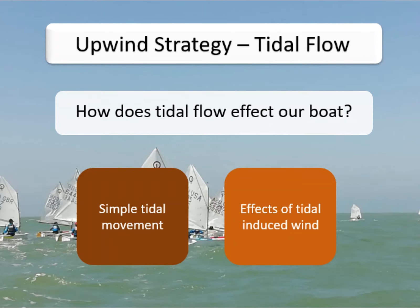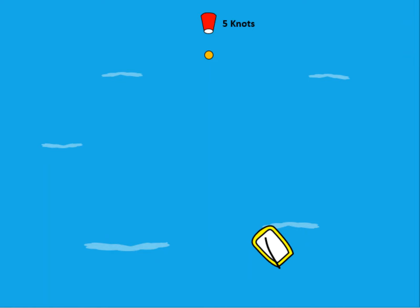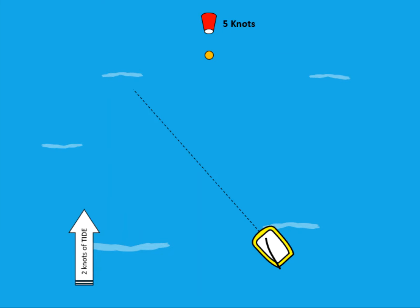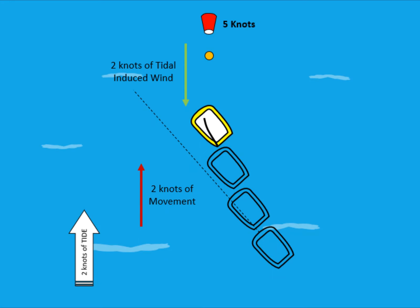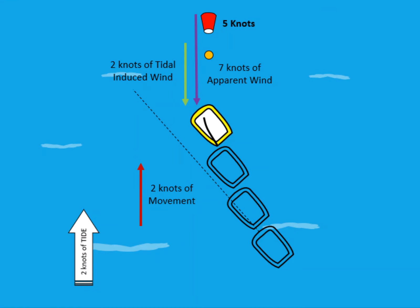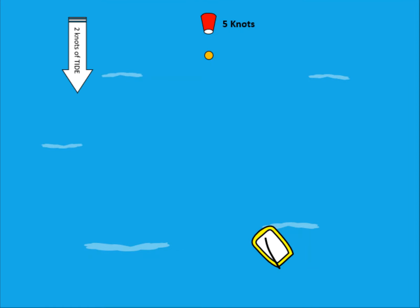Now let's look at the effect of this in normal sailing conditions. With a five knot true wind and a two knot tidal flow from bottom to top, we still feel that two knots of tidal movement and the induced wind it creates. The addition of this induced wind and the true wind means we actually feel like we're sailing in seven knots. So the tidal movement is giving us positive VMG to the windward mark and an increased boat speed.